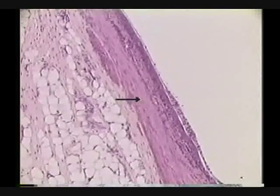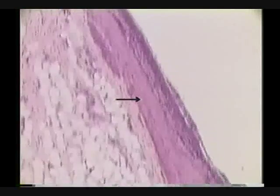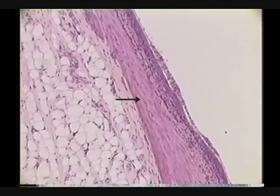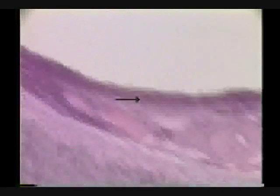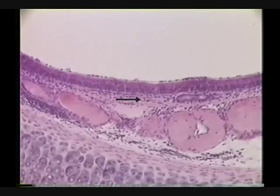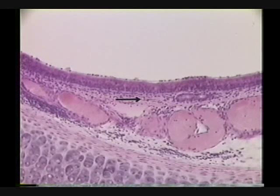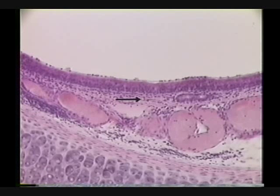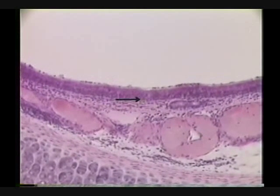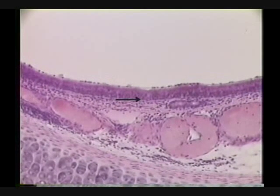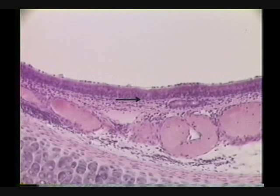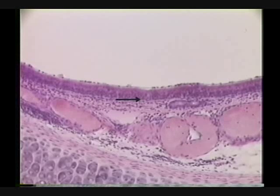Identify the tissue indicated by the pointer. The tissue is smooth muscle. Identify the layer indicated by the pointer. The layer is lamina propria. Identify the secreted noncellular layer at the tip of the pointer. The secreted noncellular layer is basement membrane.